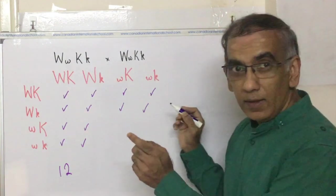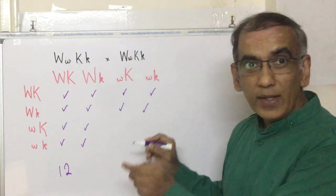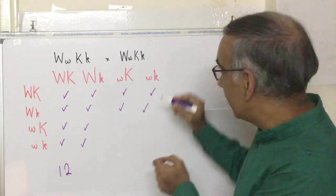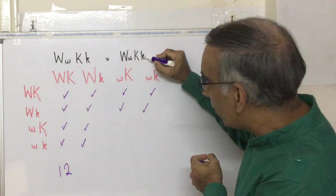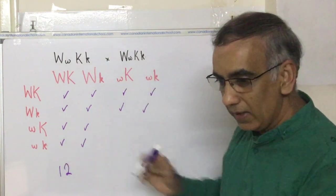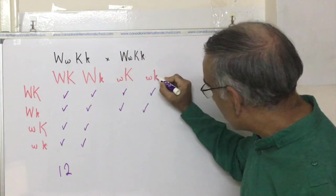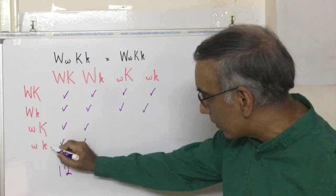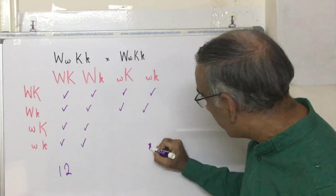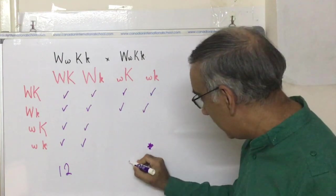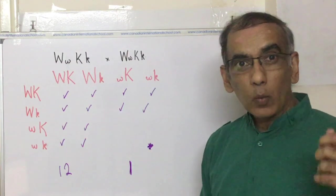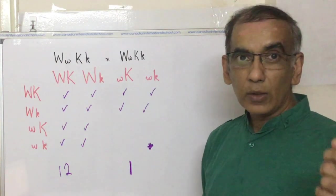Then, to confirm that the long-haired dog is brought about by homozygous recessive, we can see here that small W, small K, and small W, small K accounts for the one in the ratio, that one dog that is long-haired.